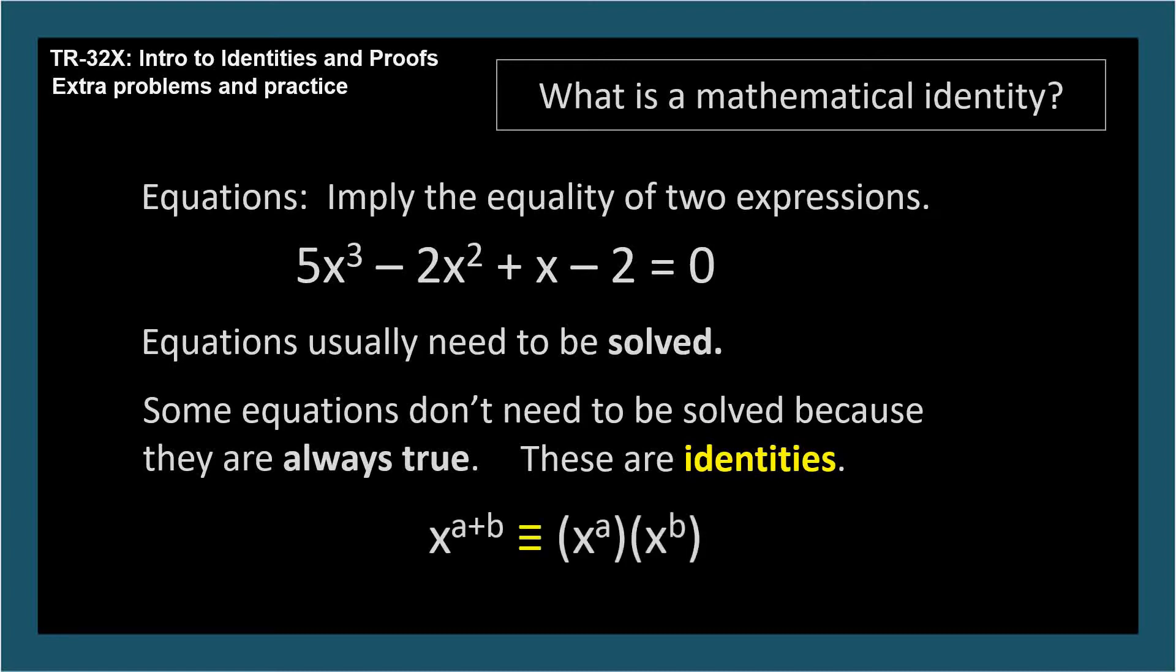Here's our identity from earlier. The identity sign is supposed to be a clue that there's nothing to solve, that the equation is intended to be taken as an identity. But as it happens, more often than not, the identity symbol is not used and equations are understood to be identities because we're told somewhere nearby that it is. But it's never wrong to use the identity symbol where appropriate.